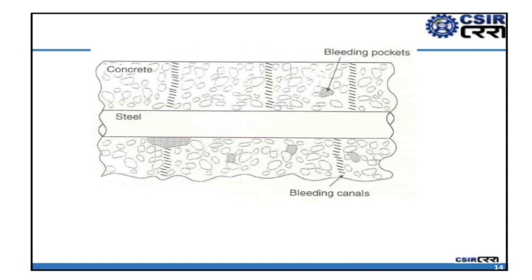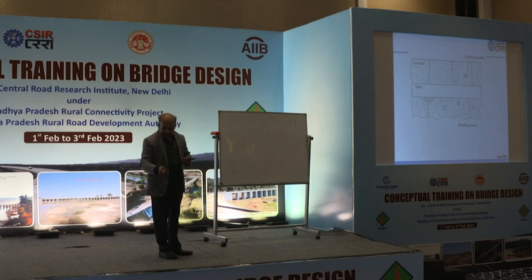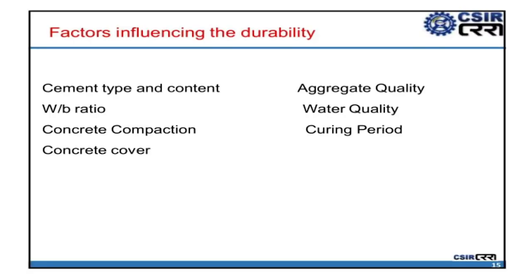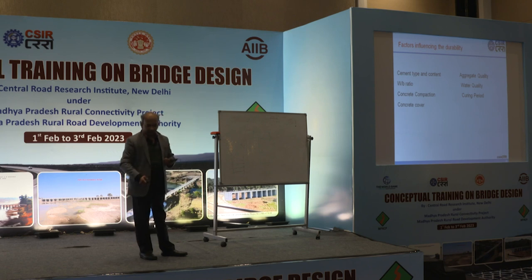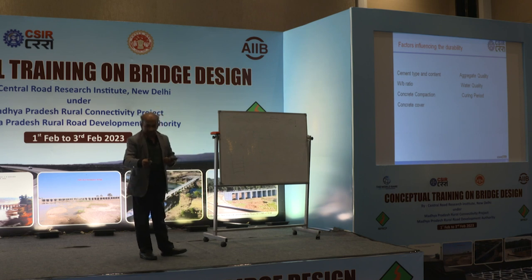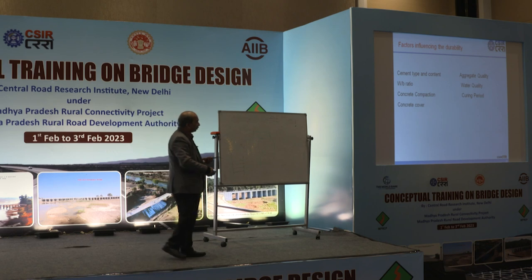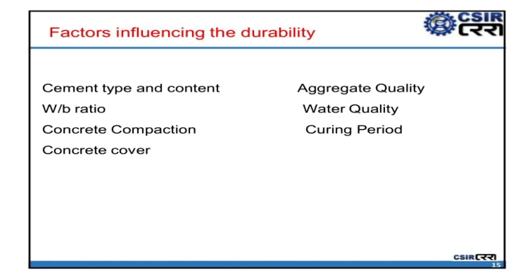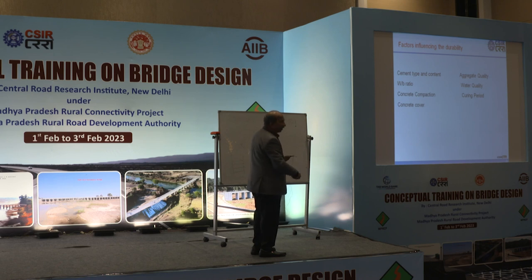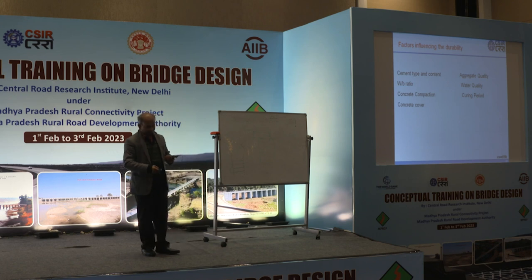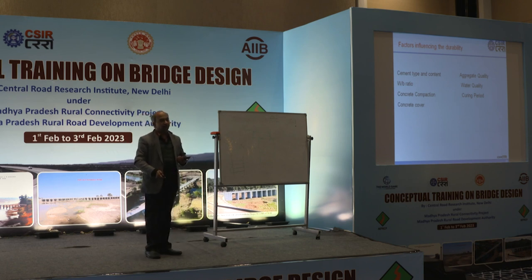Factors influencing durability during construction include: cement type and content (higher cement content gives higher strength and lower porosity), water-binder ratio (higher water causes trouble), aggregate quality (important for alkali aggregate reaction), compaction, curing, and concrete cover. All are important factors, and one should be vigilant as an engineer during construction of concrete structures to ensure good durability.